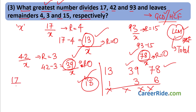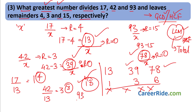Let us verify: 17÷13 gives quotient 1, remainder 4 ✓. 42÷13: 13×3=39, remainder 3 ✓. 93÷13: 13×6=78, remainder 15 ✓. The answer is correct. So 13 is the greatest number. We simply removed the remainders from the given numbers so that we got exactly divisible numbers, and then found the HCF.